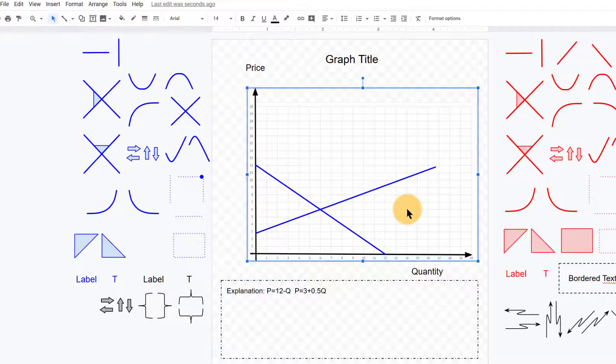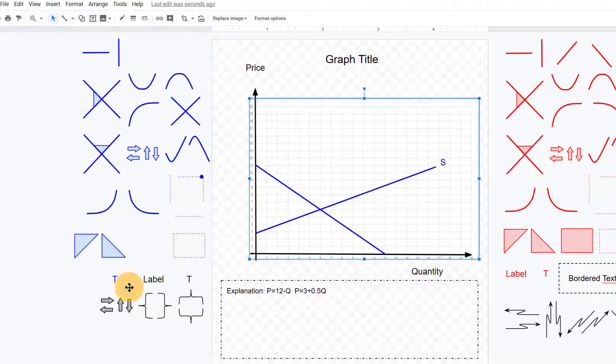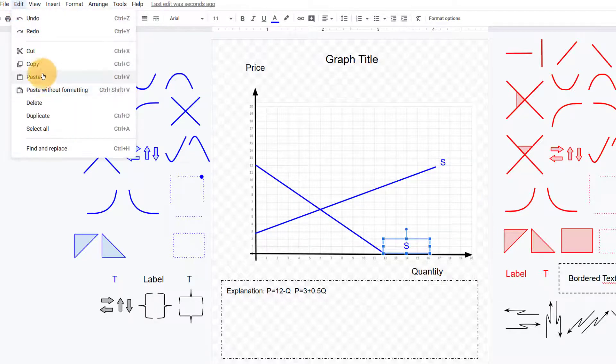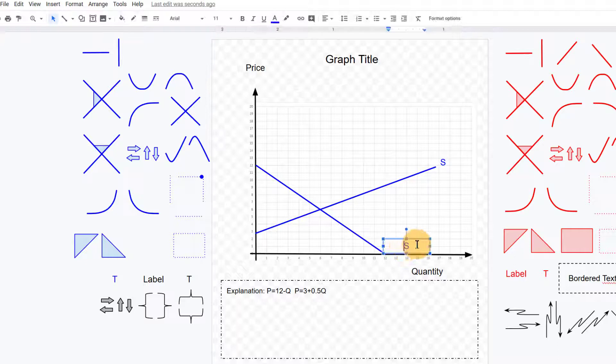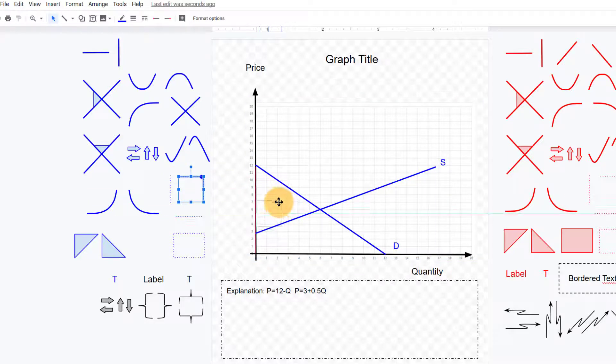Now again, we probably would want to label these as well, so we could grab one of these labels over here and drag it over and then just click in there to change it. So we'll label this with an S for our supply. And then you can also click this box and hit ctrl+C on a PC and ctrl+V to paste it, or you could use the edit copy and paste menu over here. And let's label our demand curve as well, and we could label our equilibrium if we want.